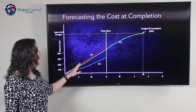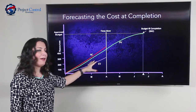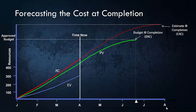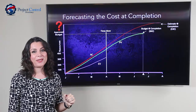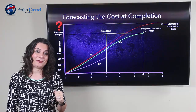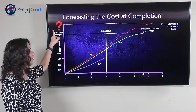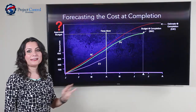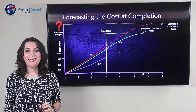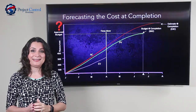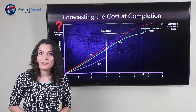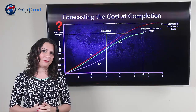By 'cost at completion,' I mean: based on our performance to date, our spending, and our plan, what would be our cost at the end of the project? In Earned Value terminology, this is called Estimate at Completion, or EAC. That's what we are trying to estimate — how much money we need at the end of the project based on our performance to date.